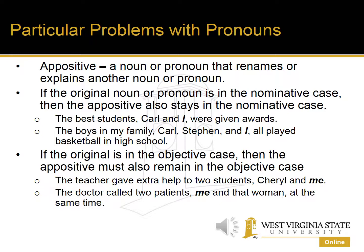On the other hand, if the original noun is in the objective case, then the appositive must also remain in the objective case. For example: 'The teacher gave extra help to two students, Cheryl and me.' Here, 'teacher' is the subject in the nominative case, 'gave' is the verb, 'help' is the object, and 'students' is the indirect object in the objective case. So 'Cheryl and me' refer back to 'students' in the objective case — we must use the objective pronoun 'me.'